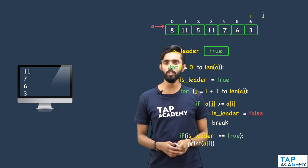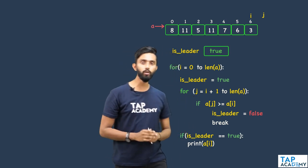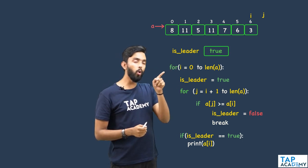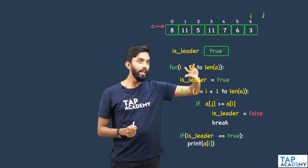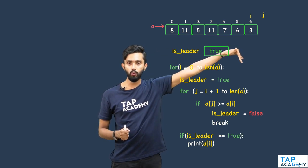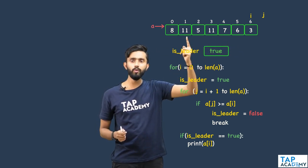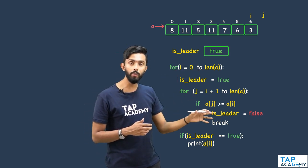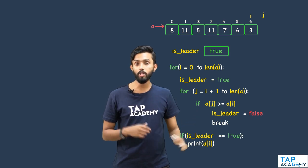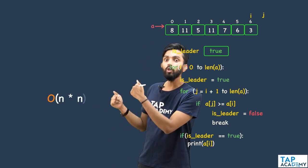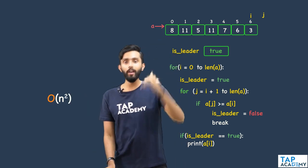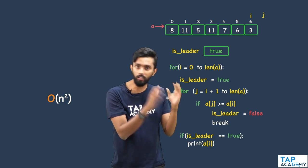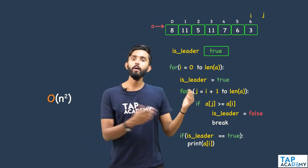This solution works. However, analyzing the time complexity: there is a loop inside a loop — a nested loop. The outer loop executes n times, and the inner loop also approximately n times, which means the time complexity is O(n²). N-squared time complexity is very bad. This is an unoptimized naive approach, but it will work.